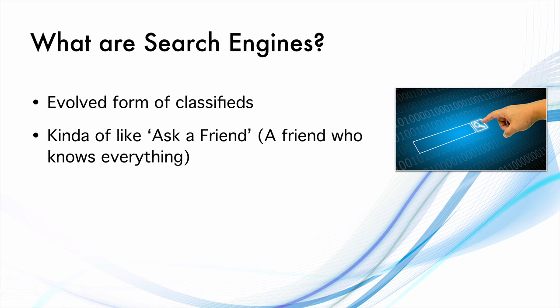Search engines are also kind of like ask a friend - a friend who knows everything. So if you want to learn about something, in the previous days you would try to go to a library, find a book on that topic, and try to find an answer within the book if it's available. But let's say you have a very intelligent friend who has read a lot of books. First you'll try asking him because you don't need to go in search of information and spend a lot of time searching for it. Since this friend has already read a lot of books and stored it in his mind, he can actually bring up an answer very fast.